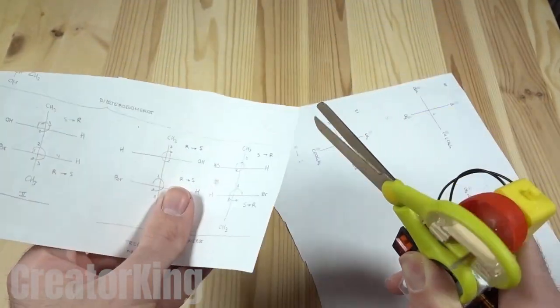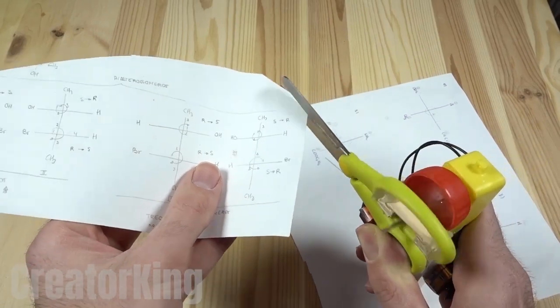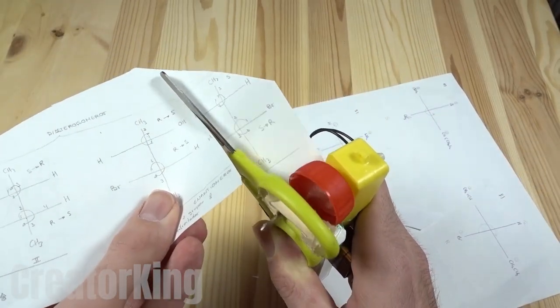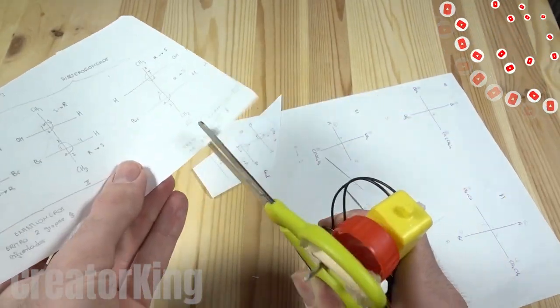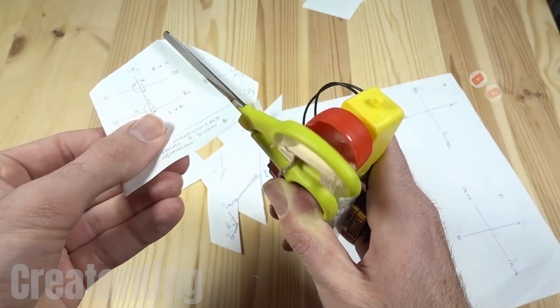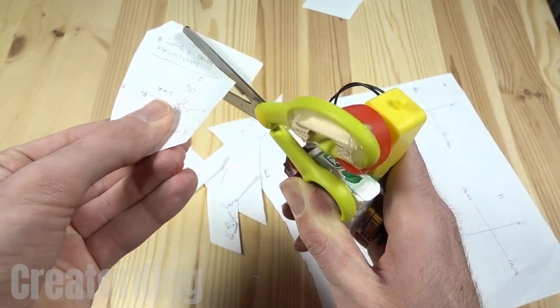The history teacher wants a picture of Christopher Columbus. The biology teacher needs a picture of a cell. Do you need to crop your ex out of a family photo? With Creator King's automatic scissors, you'll get it done quick and easy.